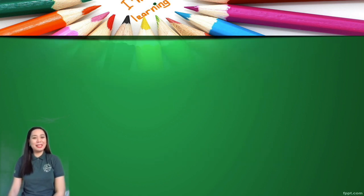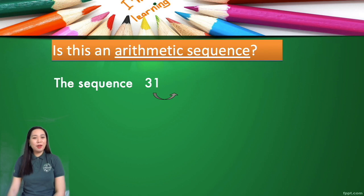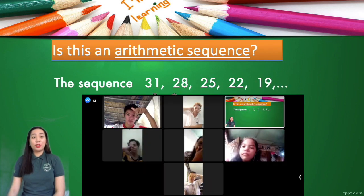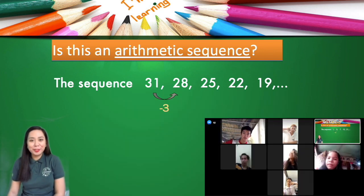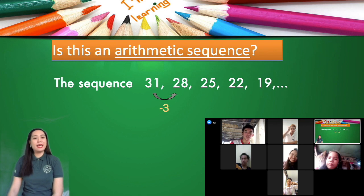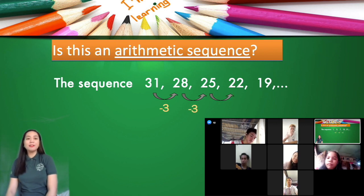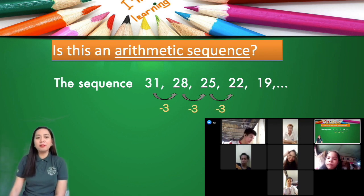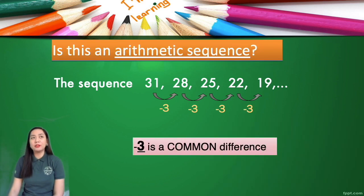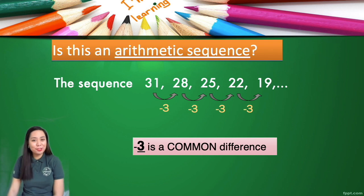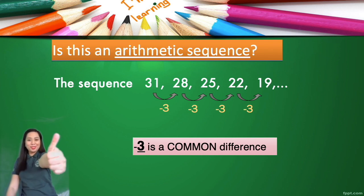Let's have the third example: 31, 28, 25, 22, and 19. The numbers are decreasing — yes, we subtracted by 3, so we are adding negative 3. Same thing: negative 3, negative 3, and another negative 3. There is a common difference, therefore it's a thumbs up.